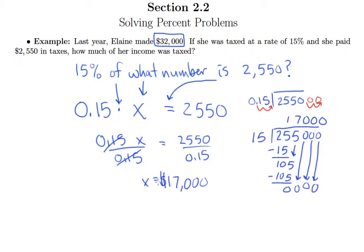So what that means is she was only taxed on $17,000 of her income. So $15,000 of her income was not taxed at all. So maybe some was given to charity. Maybe she has a mortgage and some of it was part of her mortgage interest. That's something that's tax deductible. Some of it maybe went to retirement. That might be tax deductible. So she only paid taxes on $17,000.